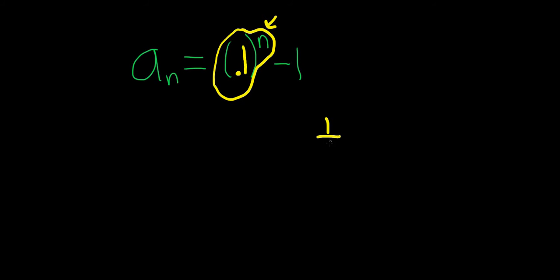Like, let's say you had 1 half to the n. So if you plug in 1, you get 1 half. If you plug in 2, you get 1 half times 1 half, so you get 1 fourth. Plug in 3, you get 1 eighth, etc.